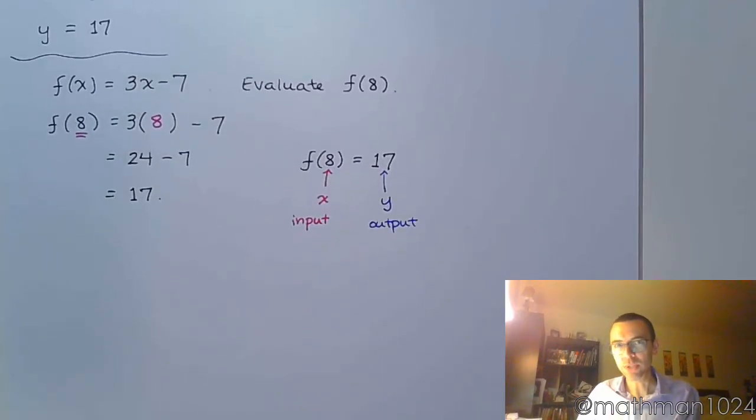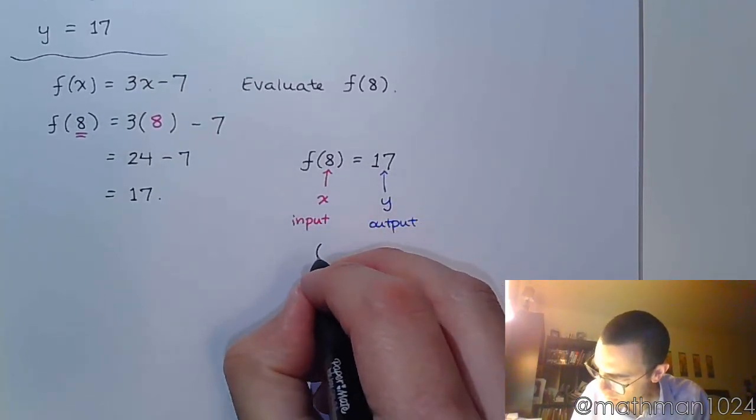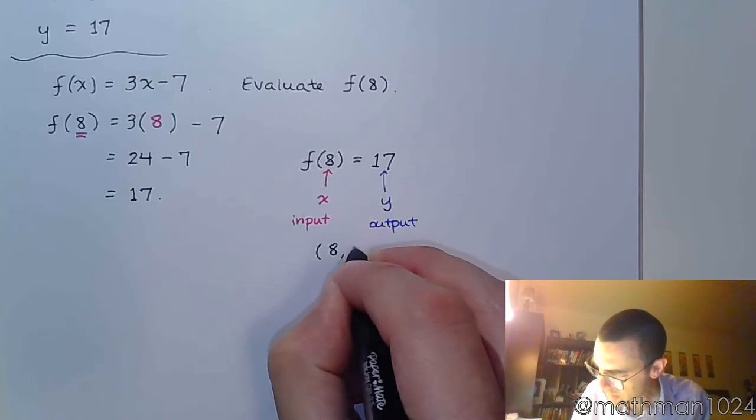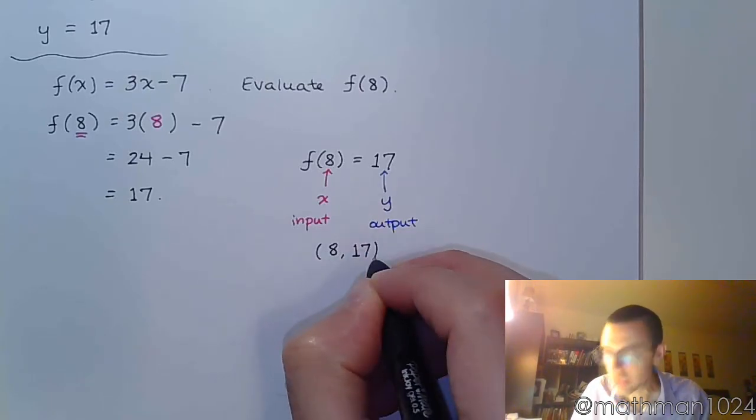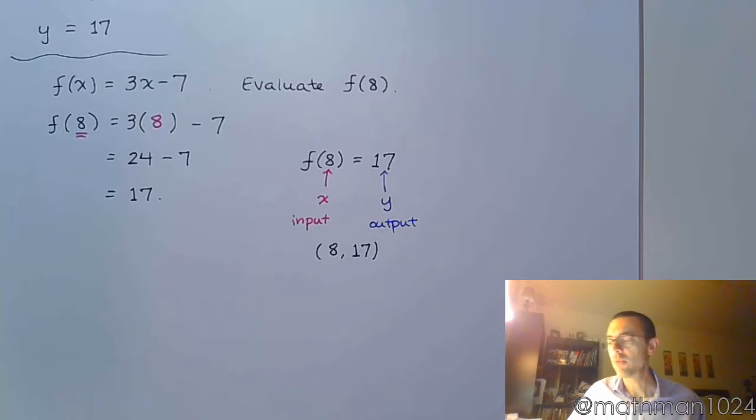And so what this means, if we were to go just a little bit further here, that means that you would have the ordered pair 8, 17. So that would be one of the points on this function f of x equals 3x minus 7.